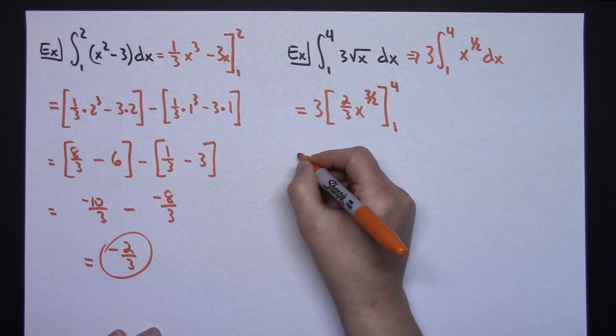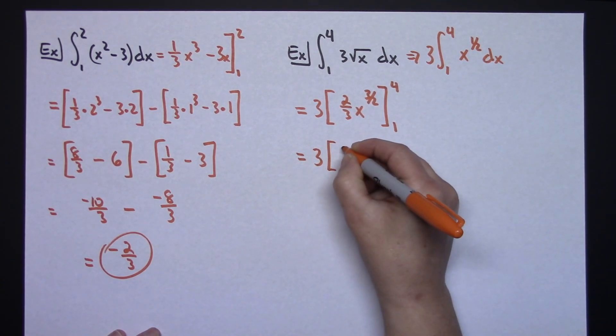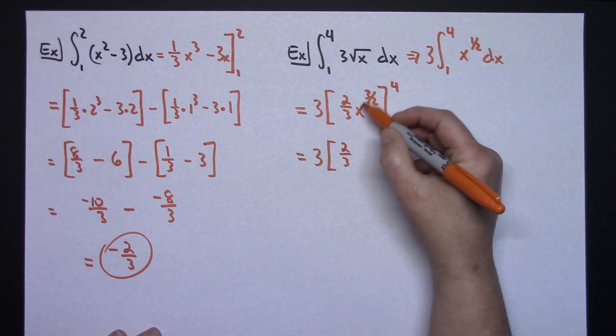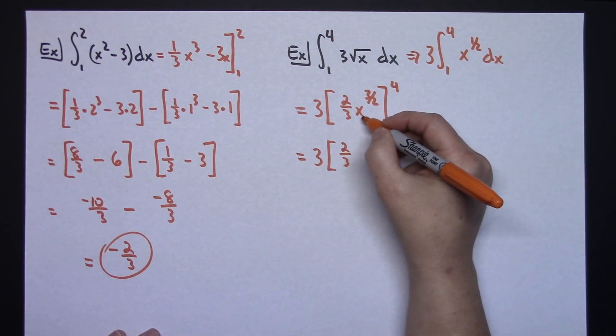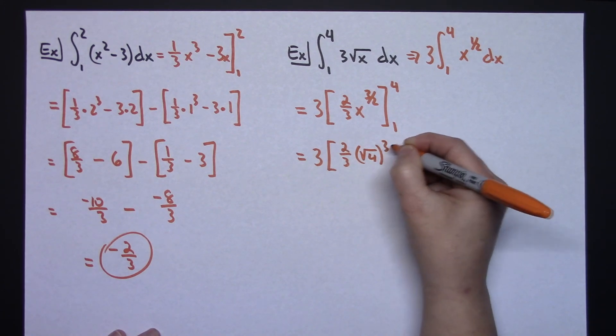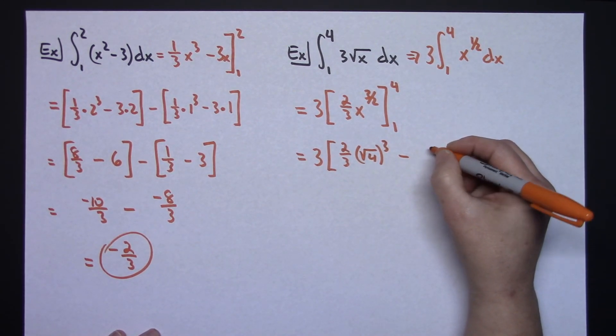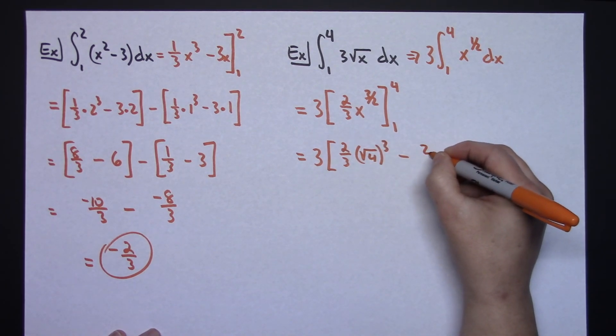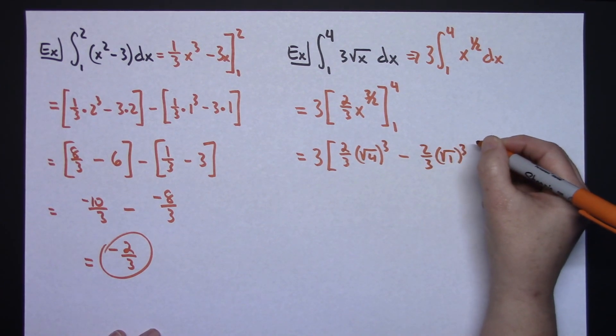So, now I'm still implementing that fundamental theorem of calculus. So, 3 and then 2 thirds. Now, let's rewrite this as the square root and then being cubed. It's going to keep our numbers way smaller here. So, when I plug in that 4, I'm going to be doing the square root of 4 and then cubed minus. Now, I'm going to plug in my 1. So, I'm going to have a 2 thirds. And again, I'm going to go square root of 1 and then cube it.